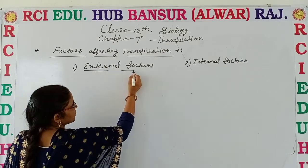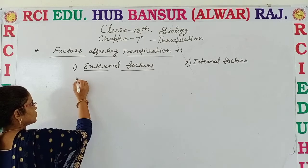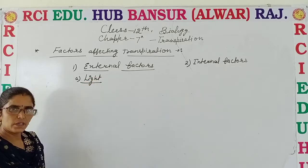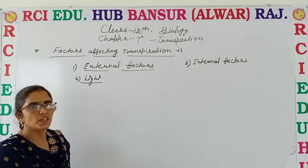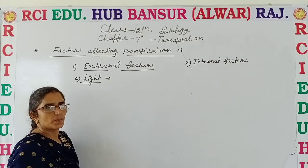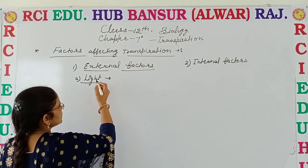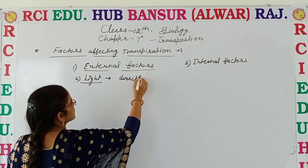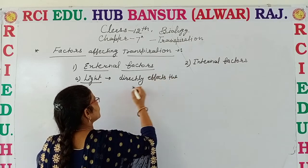First, in external factors, we discuss about four important factors which affect the rate of transpiration. The first one is light. Availability of light directly affects the rate of transpiration. As we know, light directly or indirectly increases the temperature, and as temperature increases, the rate of evaporation is high, due to that transpiration also increases. So light directly affects the rate of transpiration.